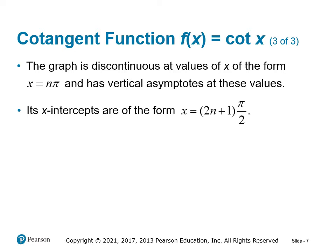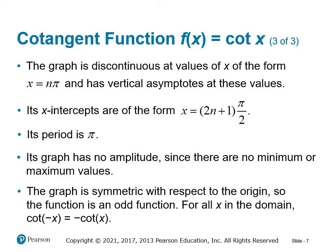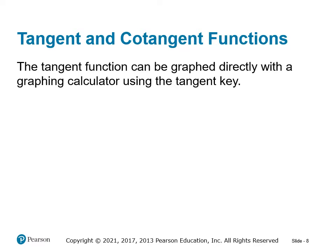The x-intercepts of cotangent are of the form (2n+1)*pi over 2 — values when cosine (the numerator) equals zero — so it crosses the x-axis at pi over 2 and 3pi over 2, the 90 and 270 degree quadrantals. Its period is also pi, and like tangent it has no amplitude because it goes from negative infinity to infinity. It's also symmetric with respect to the origin — an odd function — so cotangent of negative x equals negative cotangent of x.